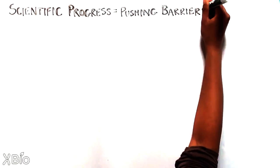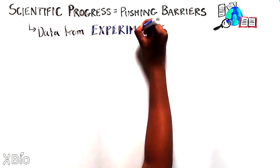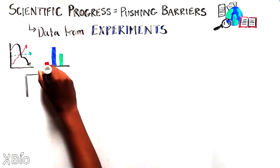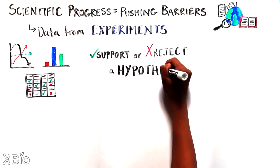Scientific progress is about pushing the boundaries of what we know about how the world works. This happens by looking at data from experiments. Experiments are designed to test the hypothesis and either support or reject it.